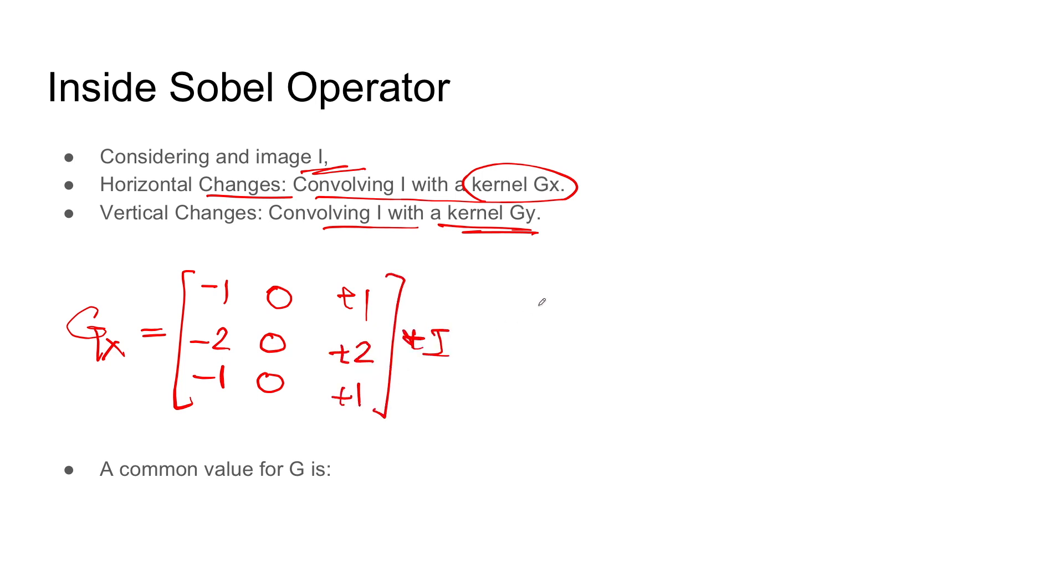And for the vertical changes, GY is equal to [-1, -2, -1; 0, 0, 0; +1, +2, +1] convolved with I.